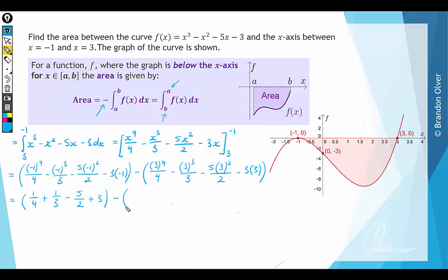Then from that we subtract away the next part, so 3 to the power of 4 is 81 over 4, then minus 27 over 3 which is 9, minus 5 times 9 which is 45 over 2, minus 9.